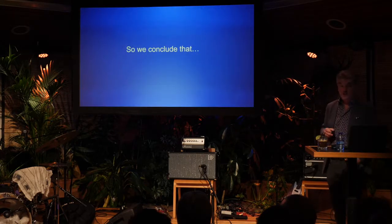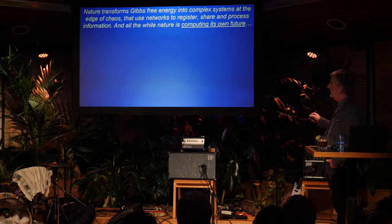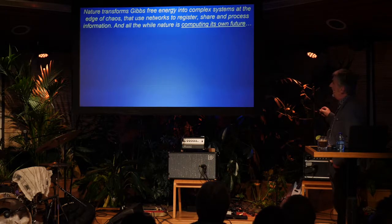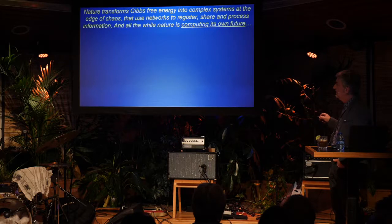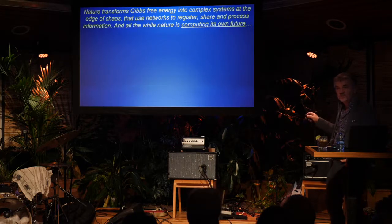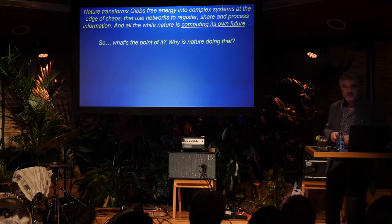So what can we conclude? Nature transforms this free energy from the Sun — this Gibbs free energy — into complex systems, and it creates those complex systems at the edge of chaos. Because if it were full chaos, it would be dead. Nature uses networks to register, share, and process that information. And all the while, nature is just computing its own future — calculating its own next state. Then you can ask: what's the point of it? Why would nature be doing that? My guess: just for fun. Thank you.